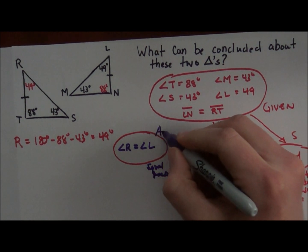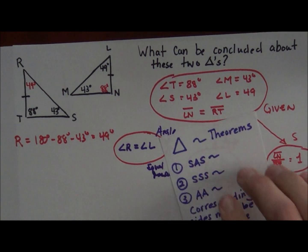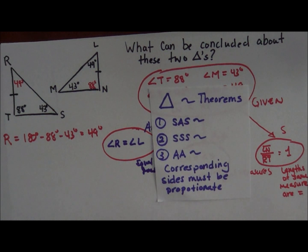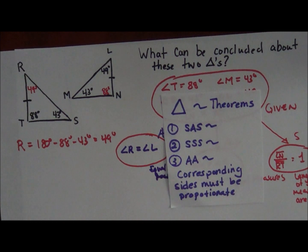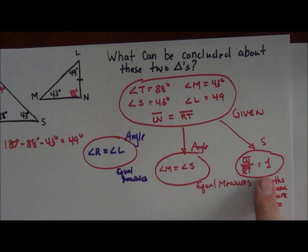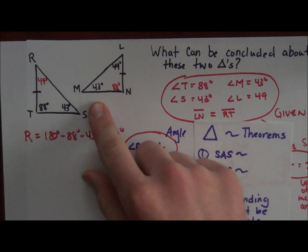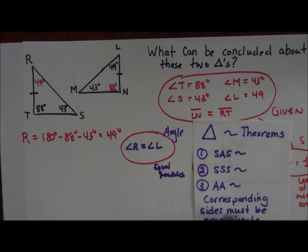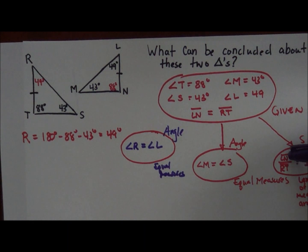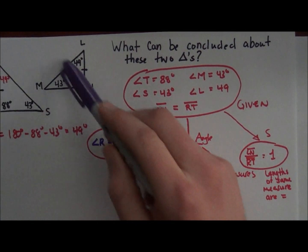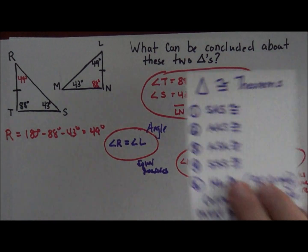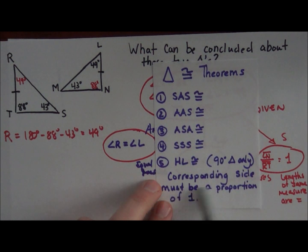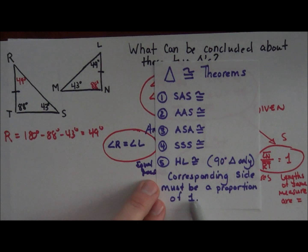Because I now have two angles of equal measure, I can say these triangles are similar. But I don't want to end the proof there. I want to check if they are also congruent. I don't have side measurements to set up a direct proportion, but since the triangles are similar and the proportion of segment LN to RT is one, then all corresponding sides have a proportion of one — meaning the entire triangles have a proportion of one. This brings me back to my congruency theorems.